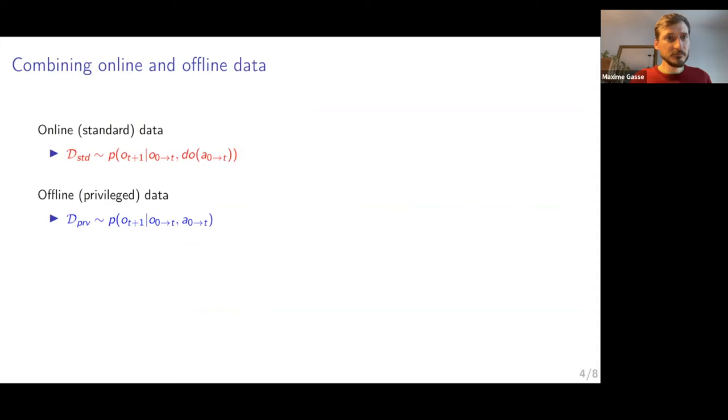So what do you do with this offline data? I told you you cannot do model-based RL with it. You can actually combine it with online data. Say that you have a dataset of online data that you collect in the intervention regime, so you have the learning agent itself decides on the actions based on the past information. So you collect data from this causal transition model. And you also have a set of offline data in the privileged regime that you collect by observing an agent acting, but the agent might rely on privileged information. So we have these two datasets.